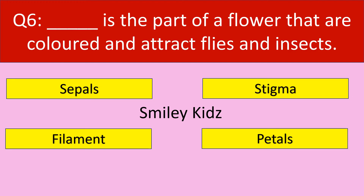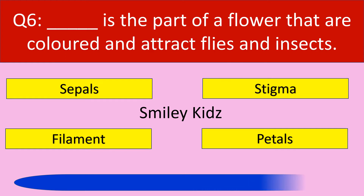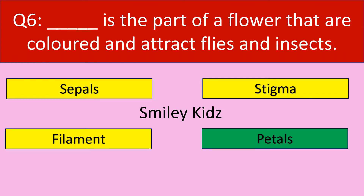Question number 6. Dash is the part of a flower that are colored and attract butterflies and insects. Options are: sepals, stigma, filament, petals. Your time starts now. Your time is up. The correct answer is petals. Petals are the part of a flower that are colored and attract butterflies and insects.